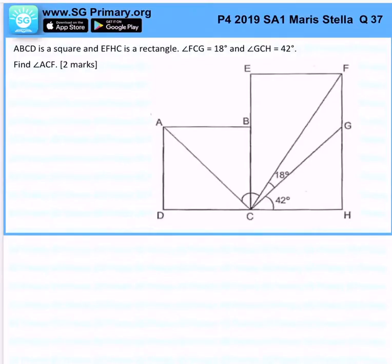ABCD is a square and EFHC is a rectangle. FCG is 18 degrees and GCH is 42 degrees. Find angle ACF.